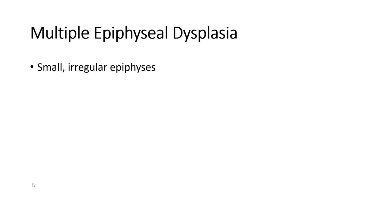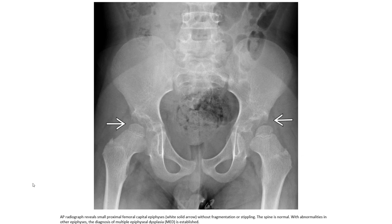Multiple epiphyseal dysplasia shows small epiphyses. This AP radiograph reveals small proximal femoral capital epiphysis without fragmentation or slipping. The spine is normal with normality in other epiphyses. The diagnosis is multiple epiphyseal dysplasia.